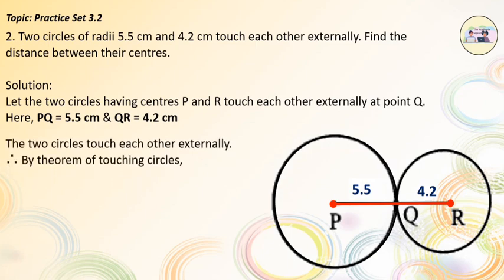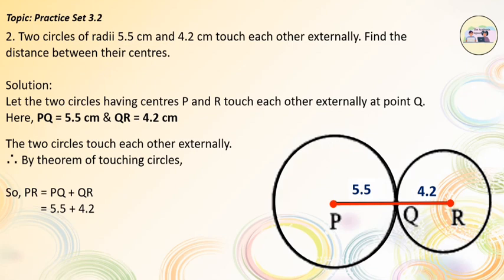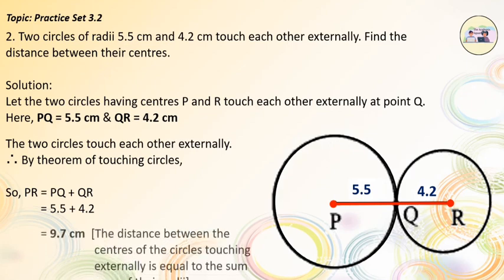The two circles touch each other externally. Therefore, by the theorem of touching circles, the distance between the centers of circles touching externally is equal to the sum of their radii. So, PR = PQ + QR = 5.5 + 4.2 = 9.7 cm.